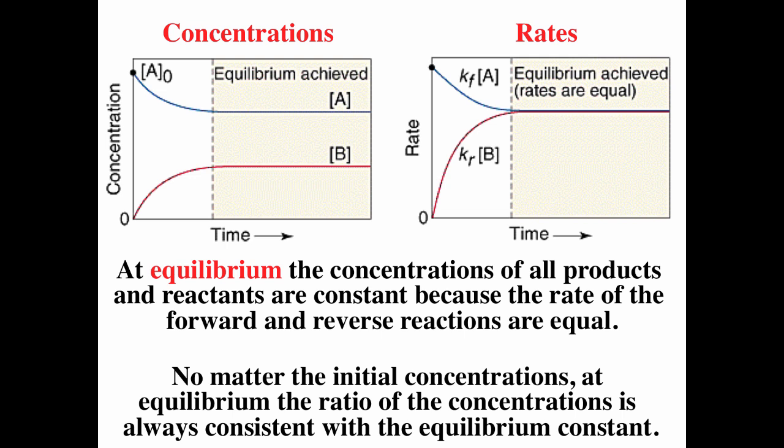Looking at a concentration-versus-time plot for A going to B: initially we have only reactants, and the concentration of A decreases while the concentration of B increases. Eventually concentrations become constant — equilibrium is achieved. On the rate plot, the rate of the forward reaction starts fast and slows as A is consumed; the rate of the reverse reaction starts at zero and increases as product concentrations build up. Eventually the rate of the forward reaction equals the rate of the reverse reaction — that is equilibrium.